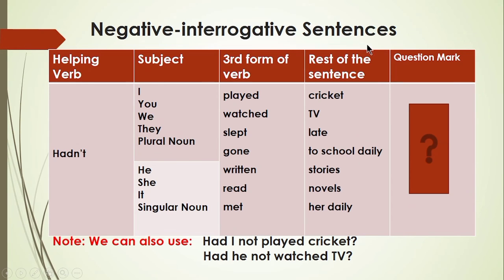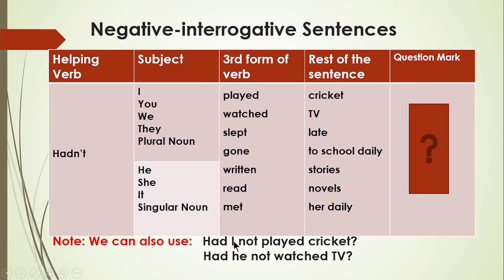For negative interrogative sentences, we bring the contraction 'hadn't' (short form of 'had not'), then subject, third form, rest of sentence, and question mark. For example: 'Hadn't you played cricket?' 'Hadn't we watched TV?' 'Hadn't they slept late?' 'Hadn't she written stories?' 'Hadn't she read novels?' We can also form these as: 'Had I not played cricket?' or 'Had he not watched TV?' The contracted form is more common in spoken language while the full form is more common in written language.